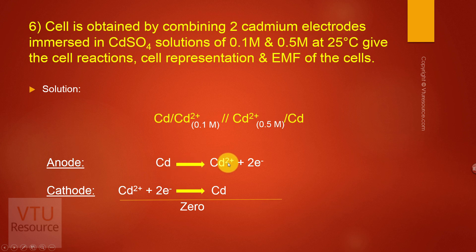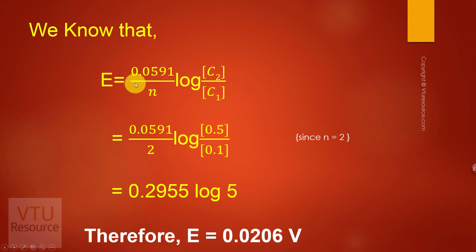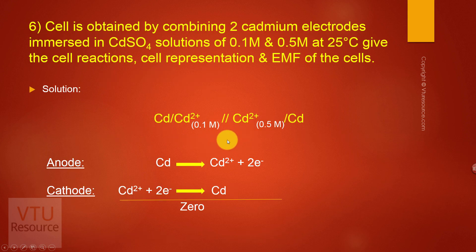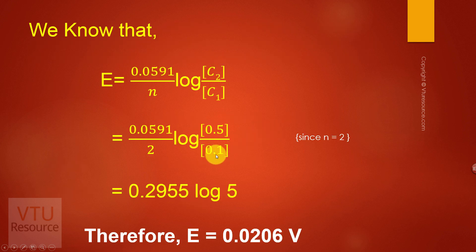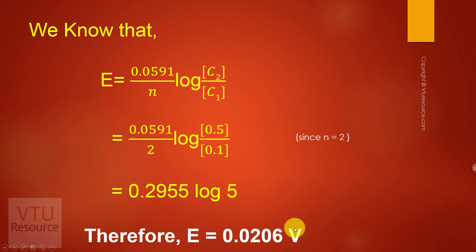At anode, cadmium undergoes oxidation to liberate Cd²⁺ and two electrons. At cathode, Cd²⁺ accepts two electrons and gives Cd. Net reaction is zero. E = 0.0591/2 × log(0.5/0.1) = 0.0591/2 × log(5). Simplifying, we get E = 0.02955 × log(5), which gives the EMF of the cell as 0.0206 volts.